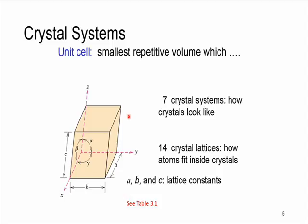Different types of unit cell configuration shapes result in different crystal systems. The parameters that control this are side lengths A, B, C and angles alpha, beta, and gamma. With different values and relations between A, B, C and the angles, we can have seven different crystal systems. We also have 14 crystal lattices, shown in Table 3.1 of your textbook.